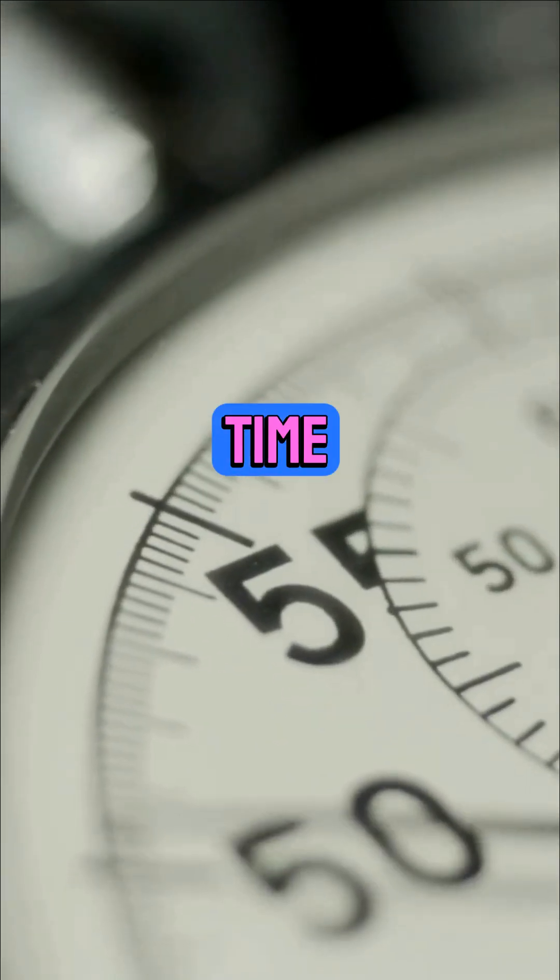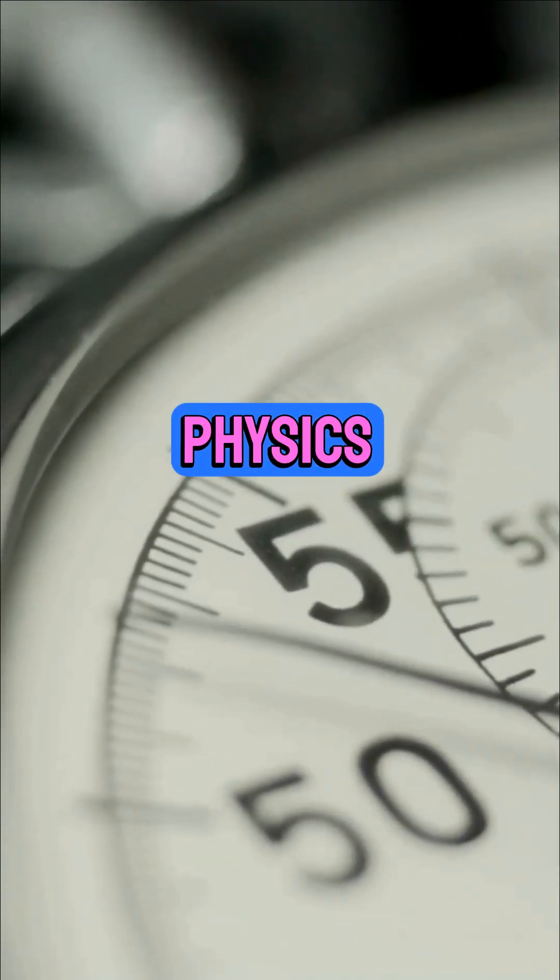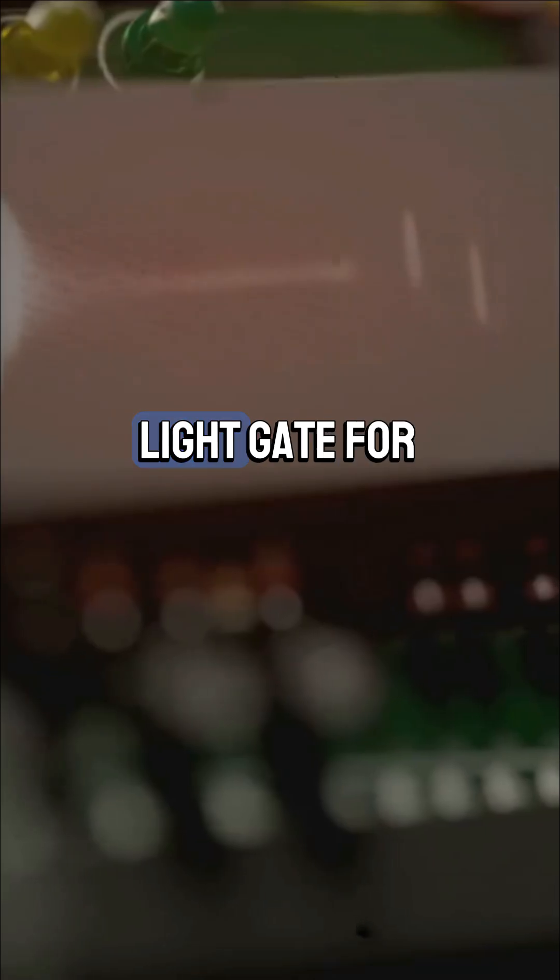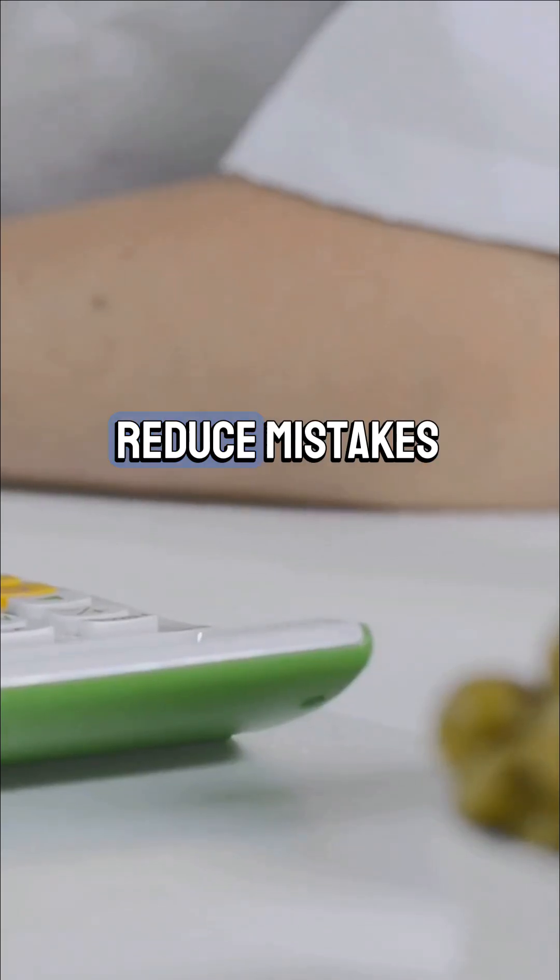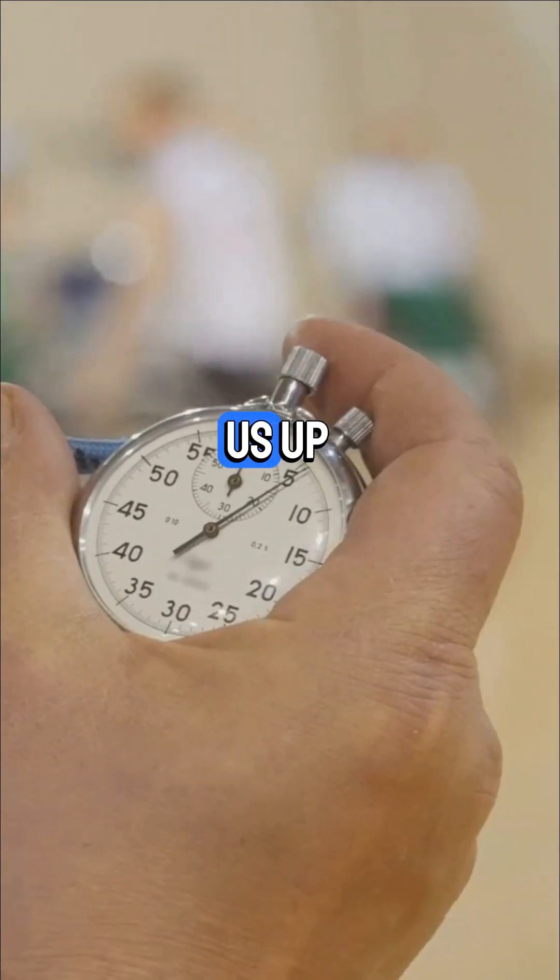Finally, measuring time. Timing is everything in physics. Use a stopwatch or a light gate for extra accuracy. Always repeat measurements and average them out to reduce mistakes - our reaction time can trip us up.